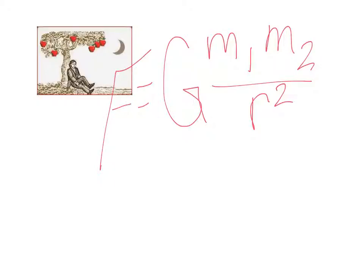So force is equal to a gravitational constant, mass one, mass two, divided by radius squared. So he had to think about it. And what does that really mean? It means that you have your two masses and your distance squared.